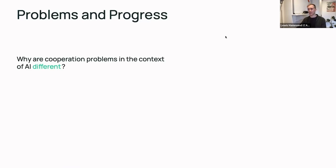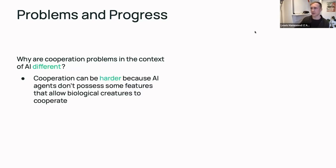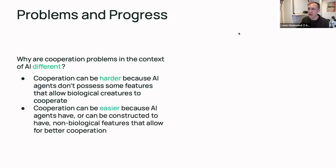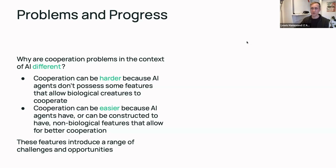One thing you might reasonably ask is: why are cooperation problems in the context of AI different? Why is this not just generic AI research, or just generic research into cooperation? There are two things to point out. First, cooperation can actually be harder in the context of AI systems because AI agents don't possess some features that allow biological creatures to cooperate more easily. At the same time, cooperation might be easier with advanced AI because they might be constructed to have non-biological features that allow for better cooperation, or allow humans to cooperate in ways they wouldn't otherwise be able to.